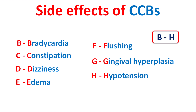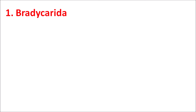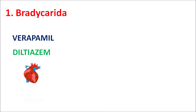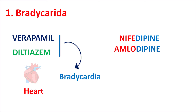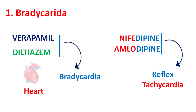Let us go through each side effect. First: bradycardia. Verapamil directly acts on the heart producing bradycardia. Similarly, diltiazem acts on both heart and vascular smooth muscle, so both verapamil and diltiazem can produce bradycardia as an important side effect. On the other hand, nifedipine, amlodipine, and other dihydropyridines produce reflex tachycardia.